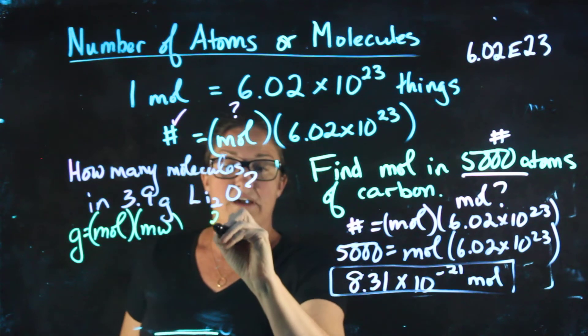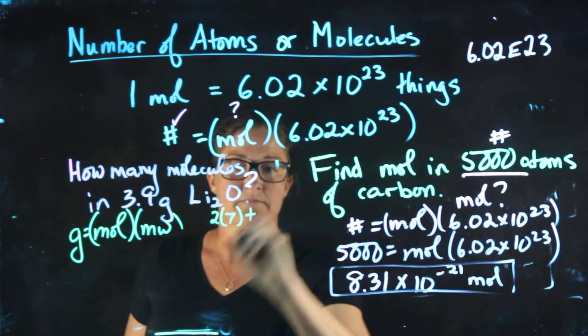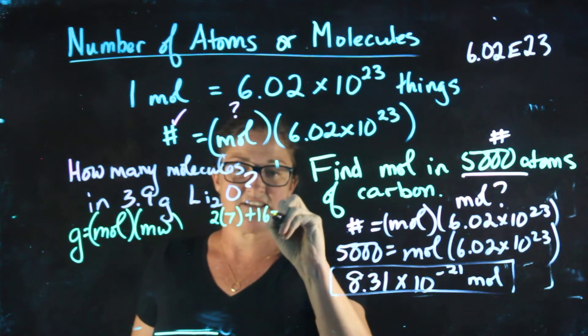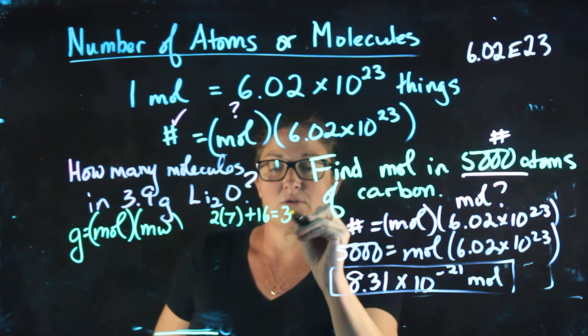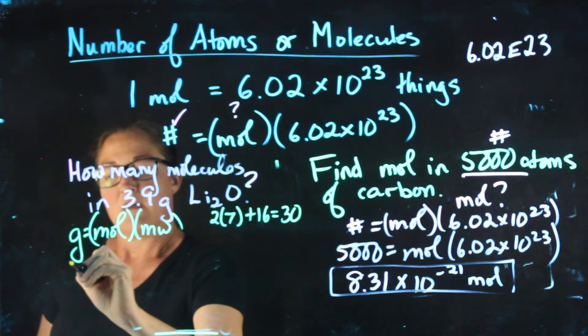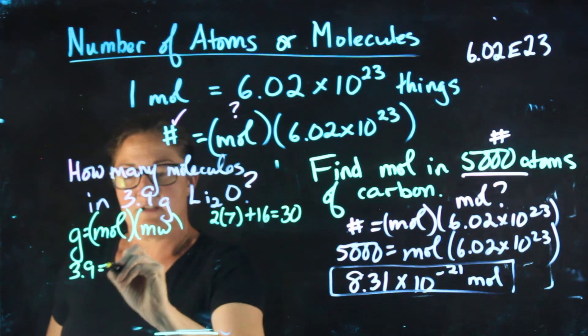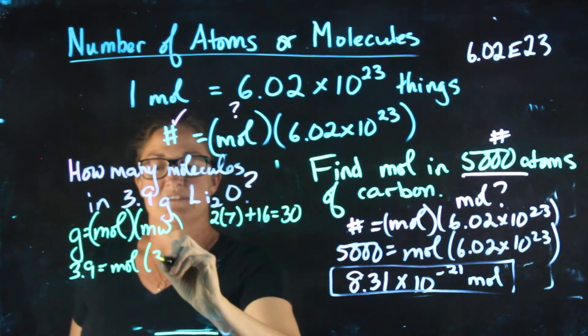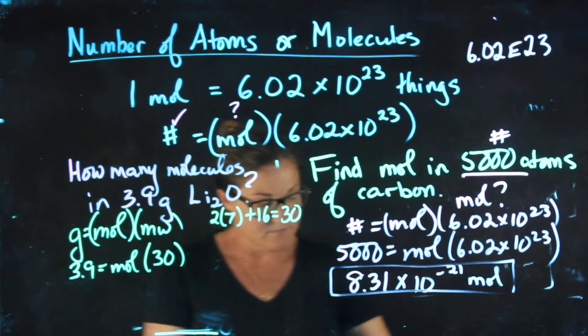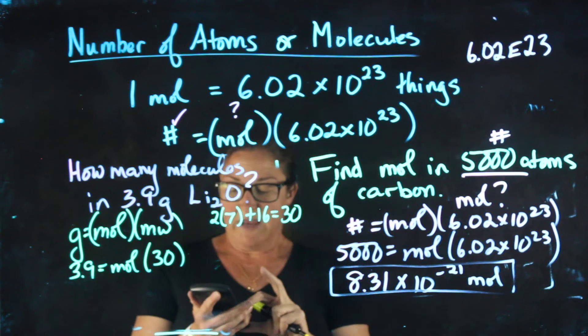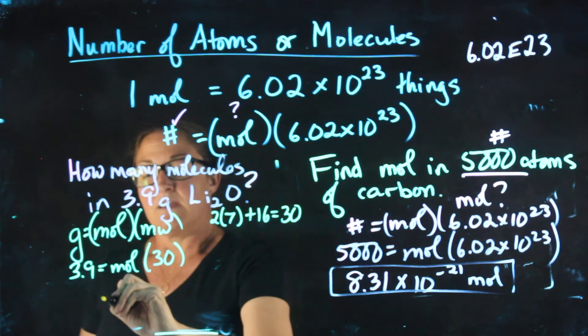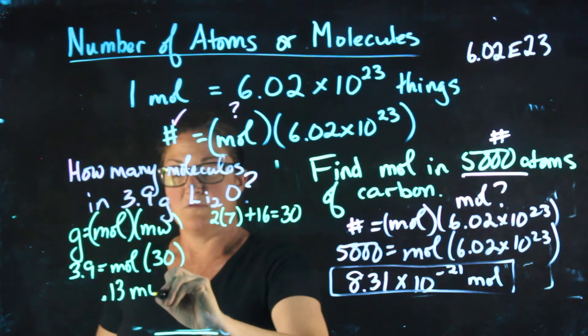Molecular weight for lithium is 7. I have two of them. Molecular weight for oxygen is 16. This gives us a total of 30. 3.9 grams equals moles times the molecular weight of 30. 3.9 divided by 30 gives me 0.13 moles.